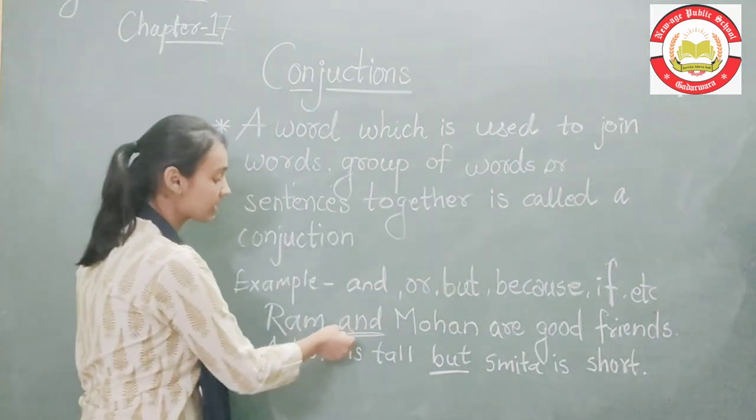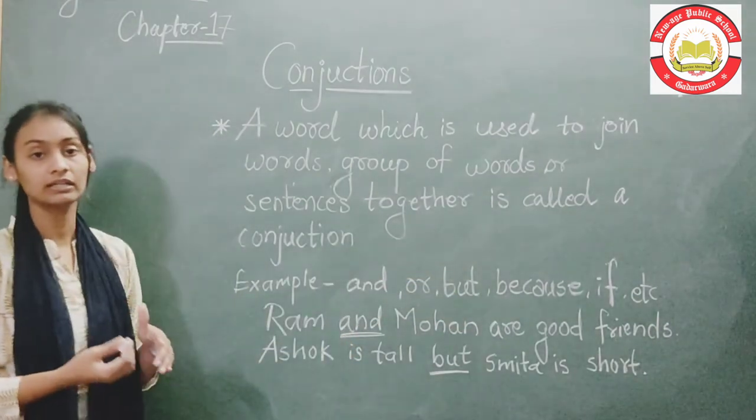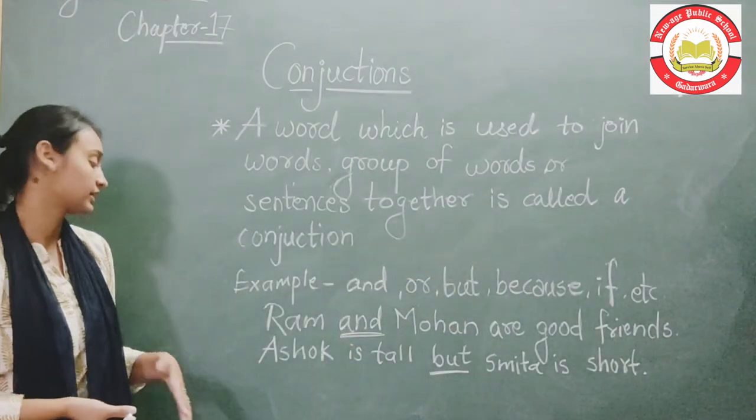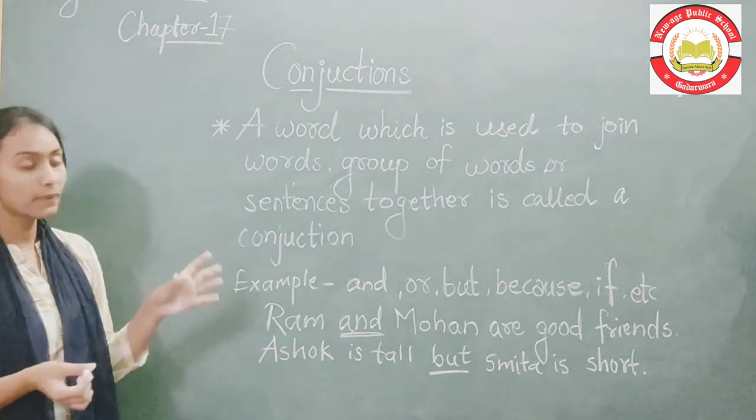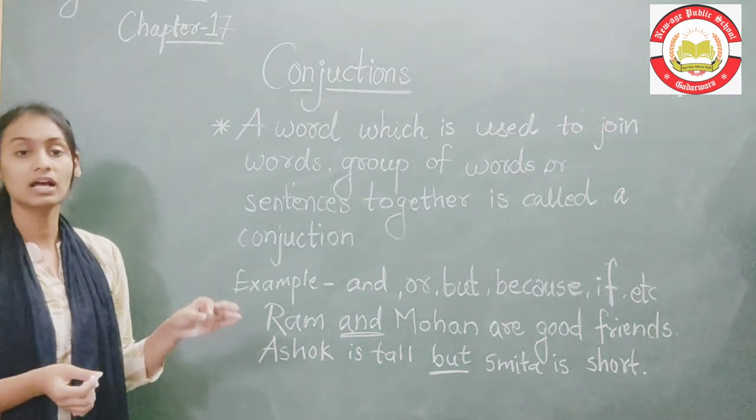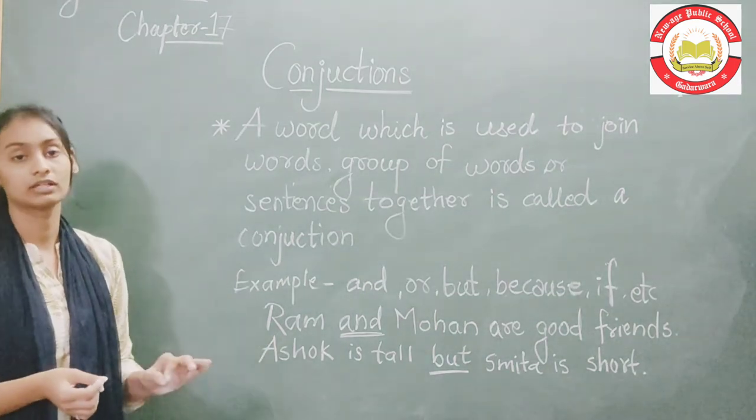Another example: Ashok is short, but Sandeep is not short. Here the conjunction 'but' is used to contrast the two parts of the sentence.